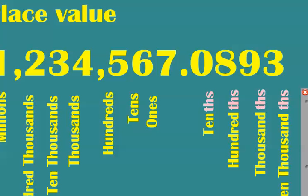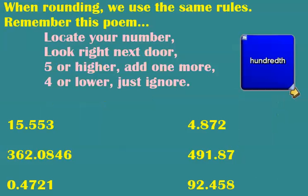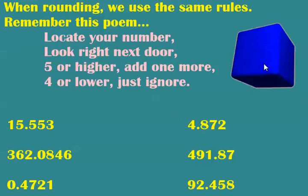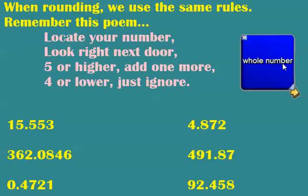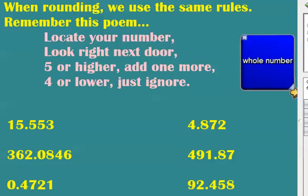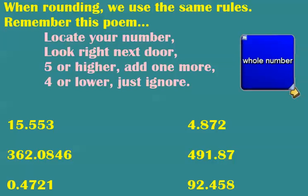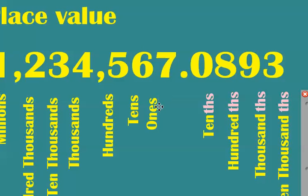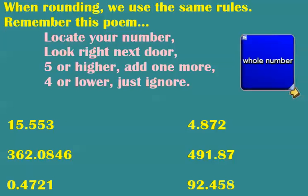Let's go practice some rounding. I'm going to roll the dice and we'll work with our first number. This number is fifteen and five hundred fifty-three thousandths. We're going to round this to the nearest whole number. When it says whole number, it's looking for the ones place — that first place value in the whole numbers. So our ones digit here is the five, and I'm going to underline it.